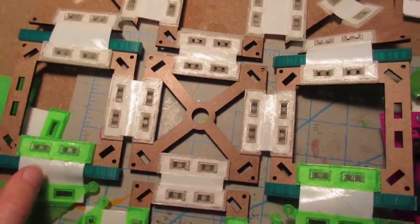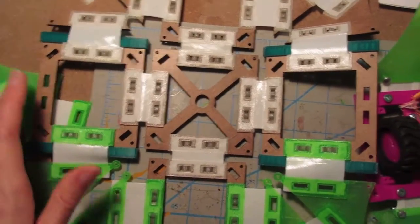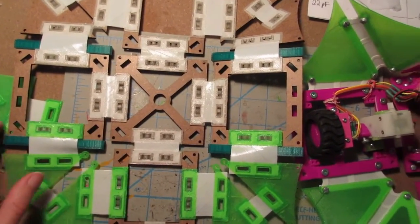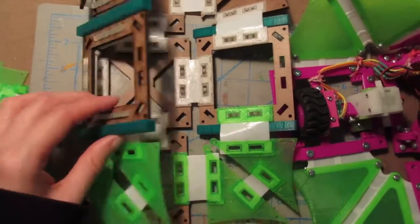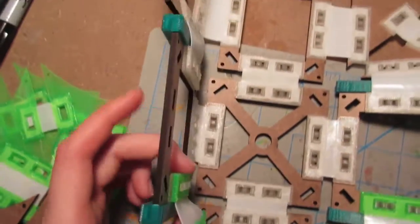Something else that you may notice that's different about this version from this one is that this one, I have access to a laser cutter now. So the side pieces and the base piece are all laser cut. I was also able to integrate the rails into this design.